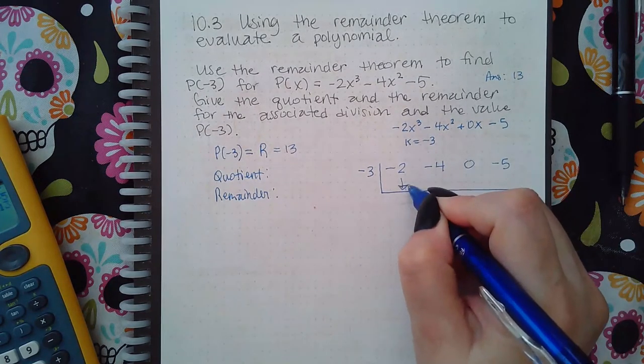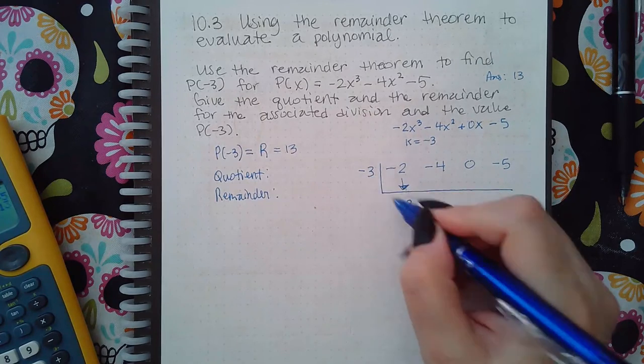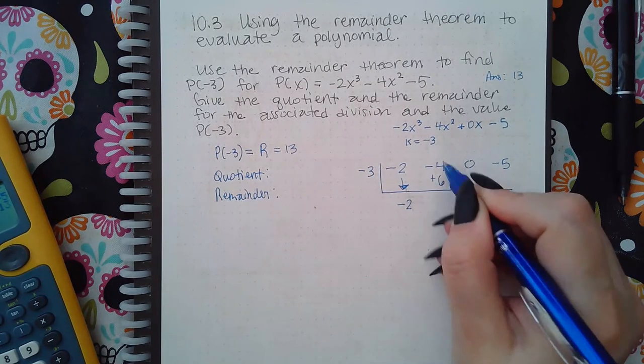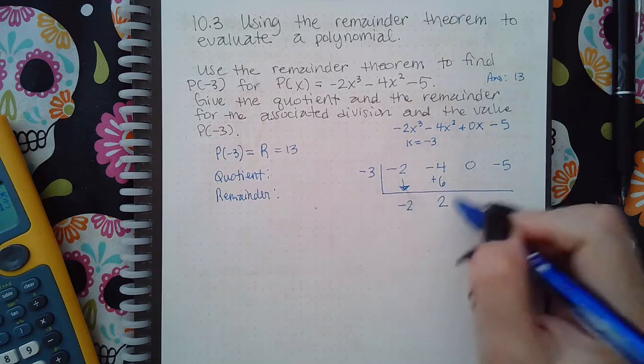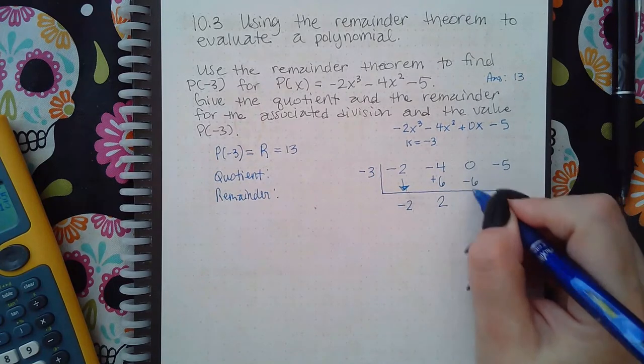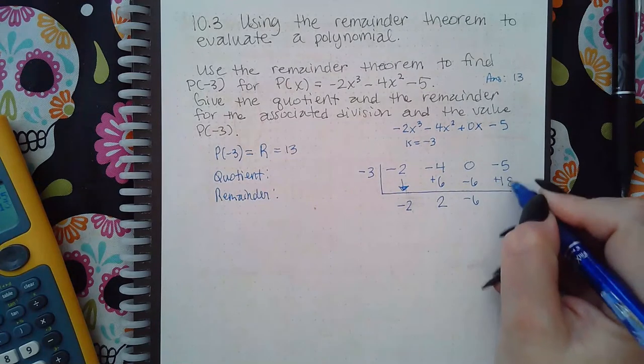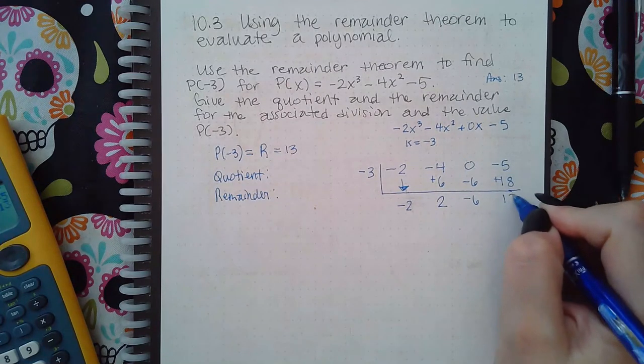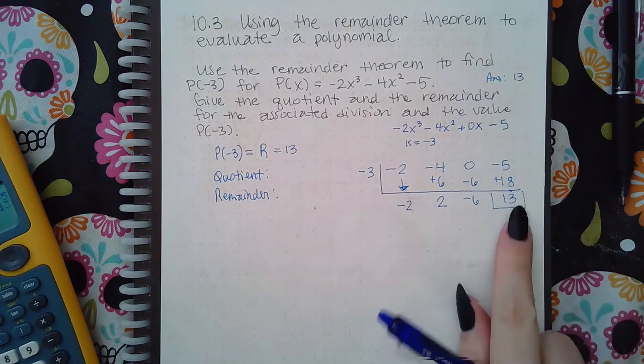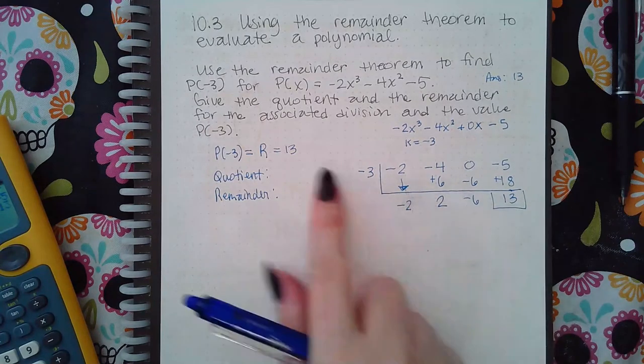Bring down the first number, multiply what's down here, combine, multiply what's down here, combine, multiply what's down here, then combine. And sure enough I get that positive 13 remainder like I thought we would.